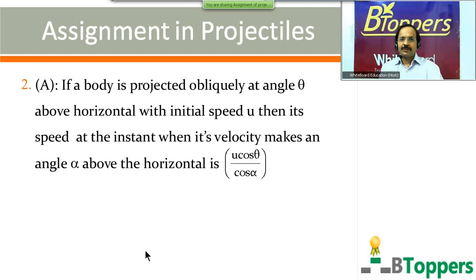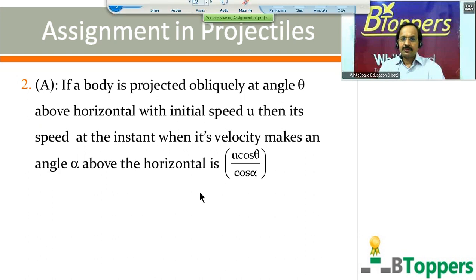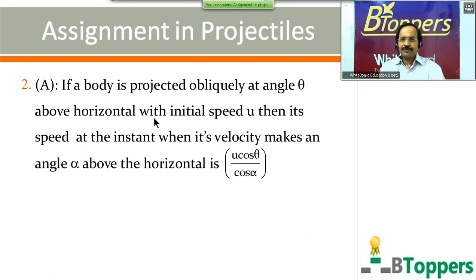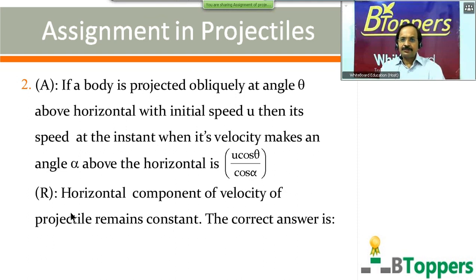The next question is also an assertion-reason question. Assertion: a body is projected obliquely at an angle theta above the horizontal with initial speed u. Its speed at the instant when its velocity makes an angle alpha above the horizontal is u cos theta divided by cos alpha. Reason: the horizontal component of velocity of a projectile remains constant.